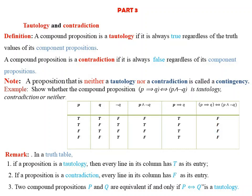So as a result, p implies q if and only if p and negation q — here we know that every line gives false, and therefore it is a contradiction. Remarkably, if a proposition is a tautology, every line in its column has T as its entry. For a contradiction, every entry in the final column is F.